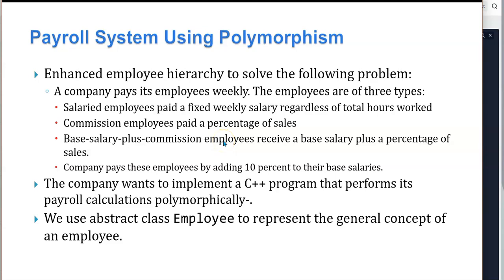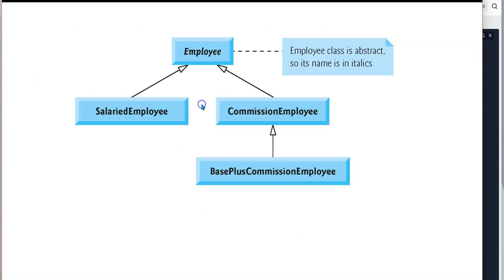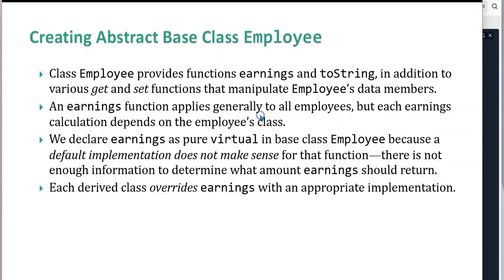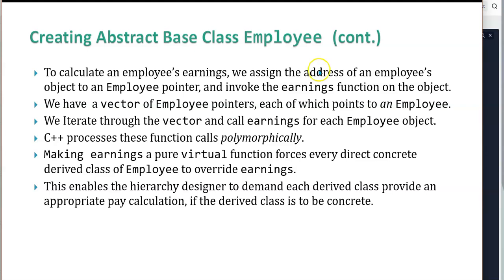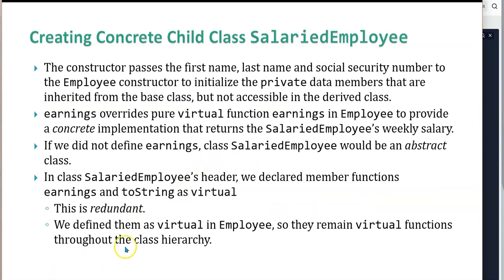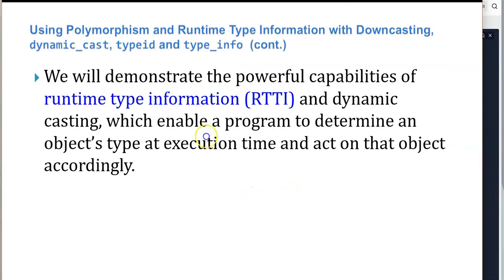The enhanced payroll hierarchy: a company pays its employees weekly. There are three types: salary employees paid a fixed weekly salary, commission employees who get a percentage of sales, and base salary plus commission employees who receive a base salary plus a percentage of sales. The company implements a C++ program that performs payroll calculations polymorphically, using abstract class employee to represent the general concept. Salary employee and commission employee inherit from employee, which is abstract, and base plus commission employee inherits from commission employee. We declare employee and set its earnings method to be virtual, then assign the address of an employee object to an employee pointer and invoke the earnings function.